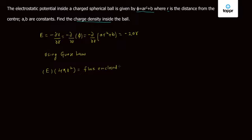We know that this flux enclosed equals charge enclosed divided by epsilon 0. This equals charge density sigma into 4 by 3 pi r cubed, that is the volume enclosed till r, divided by epsilon 0. Solving this further, we get sigma is equal to 3 times E times epsilon 0 divided by r.